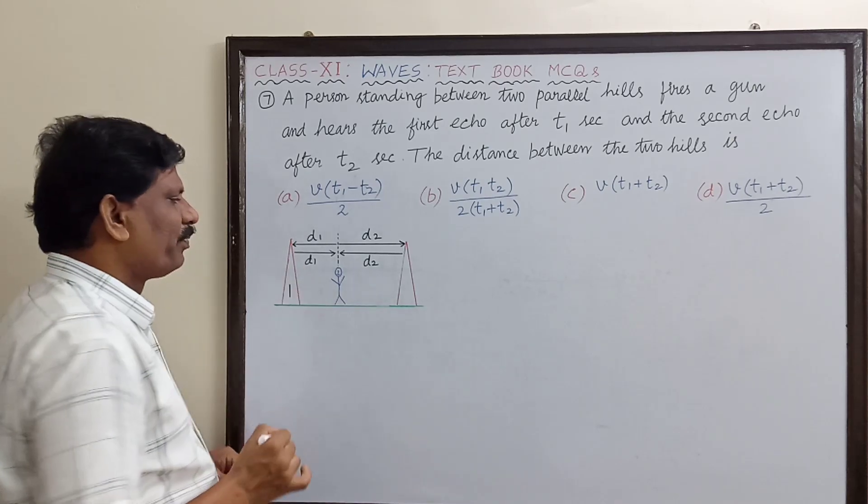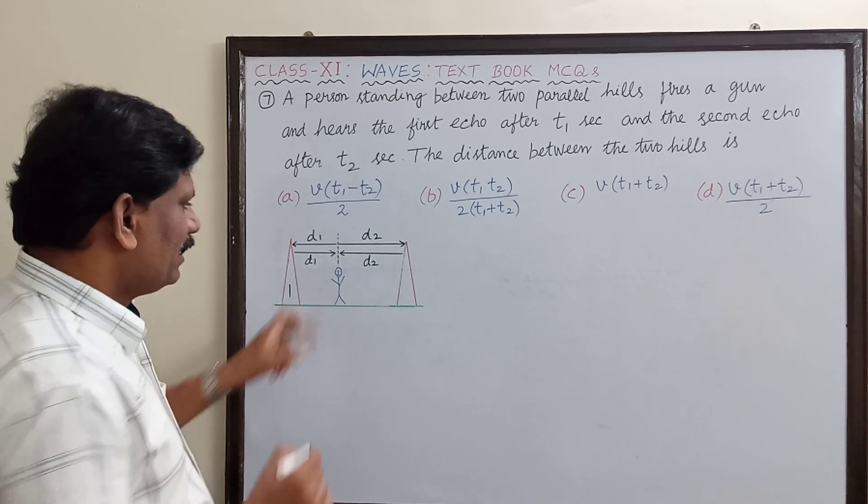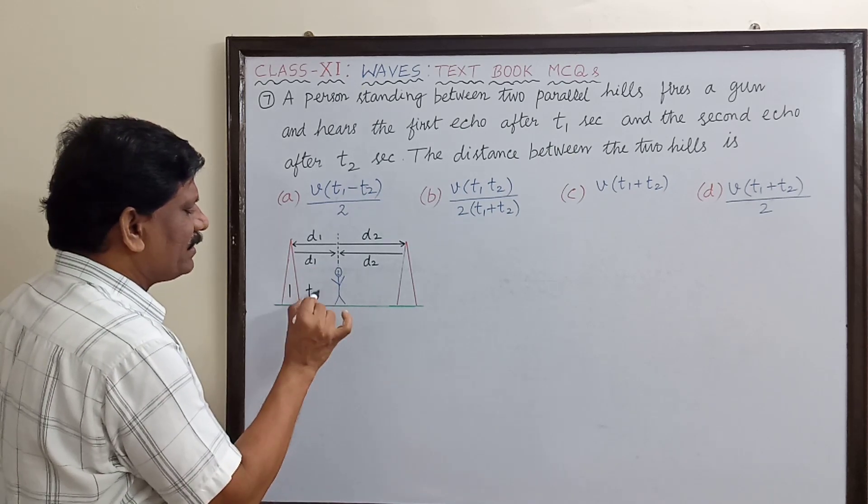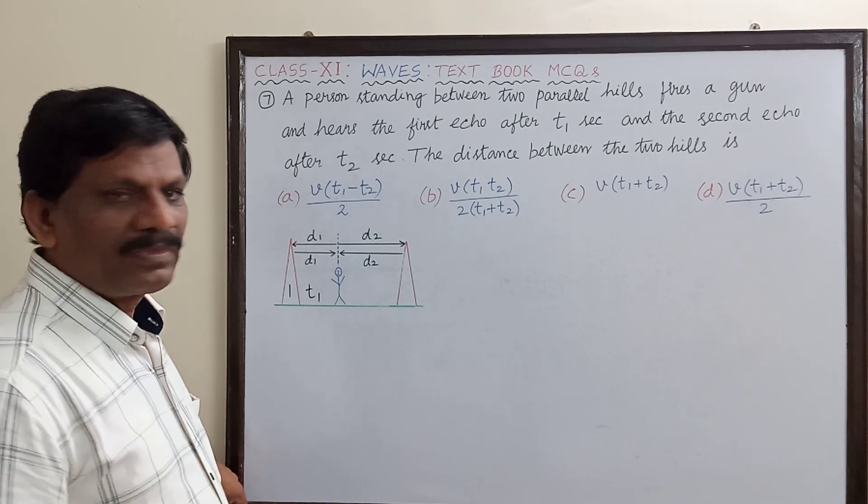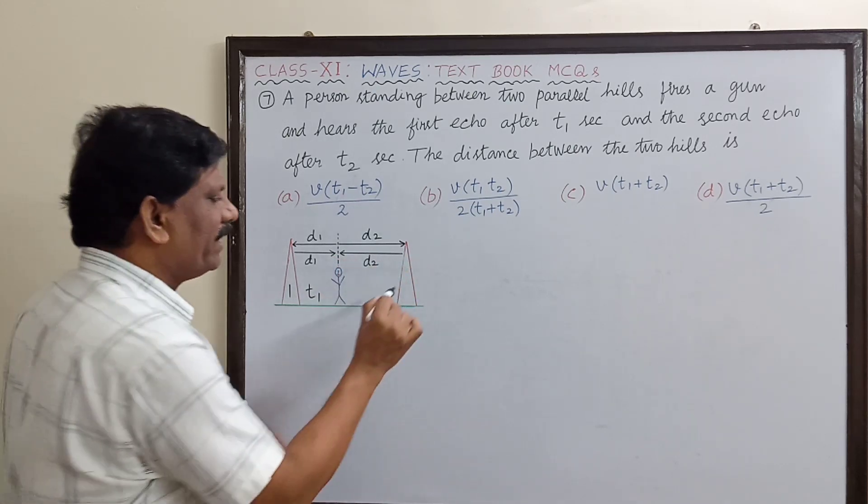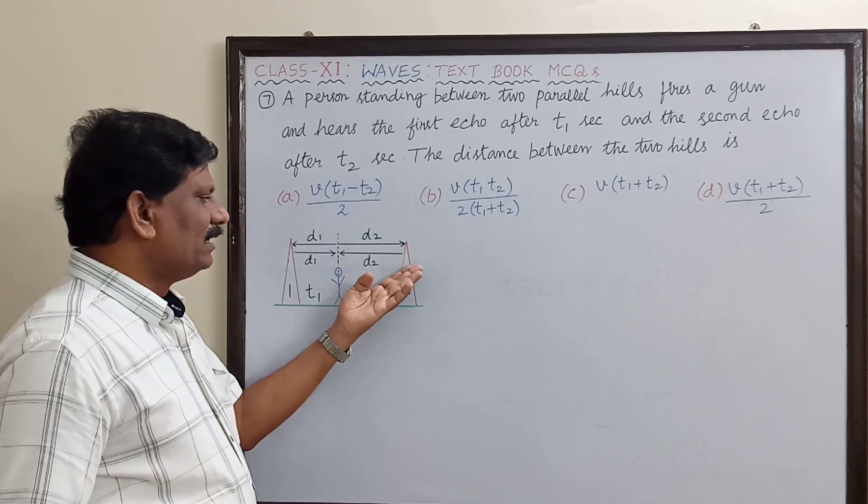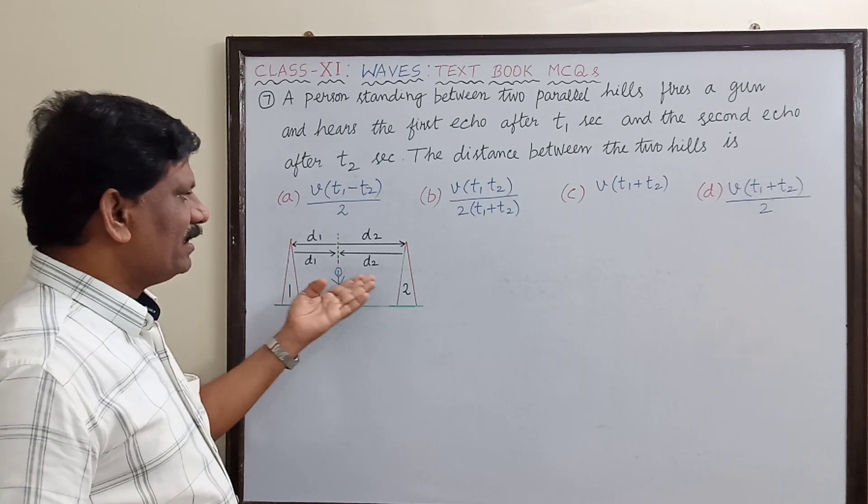So d1 plus d1 is 2d1. How much time it has taken is t1. Similarly, another sound which is traveling towards hill number two travels a distance d2 and returns the same distance d2.